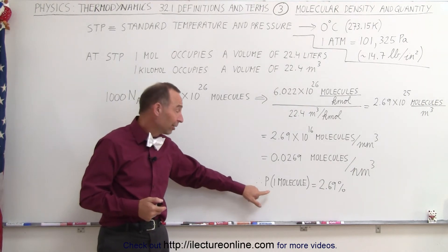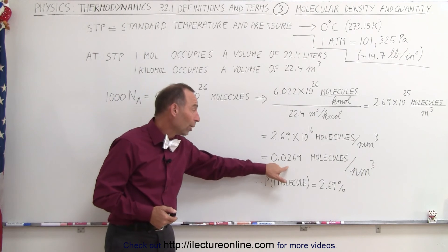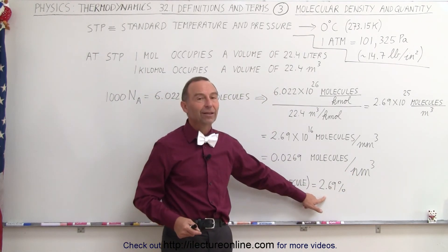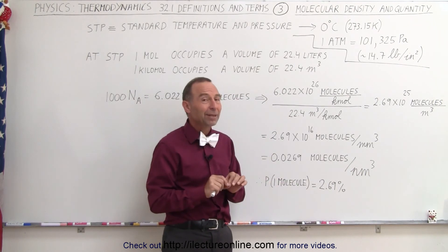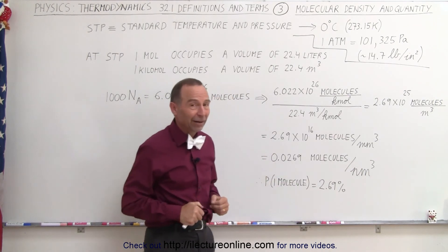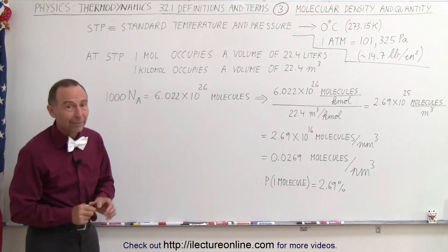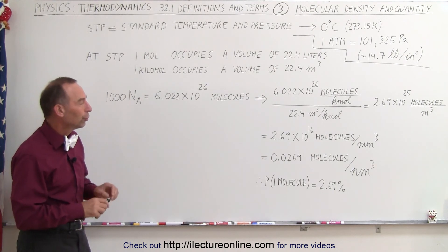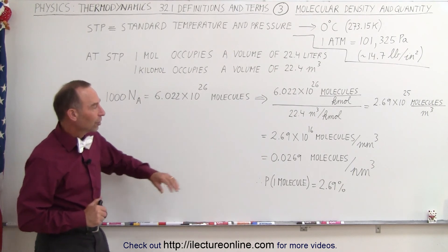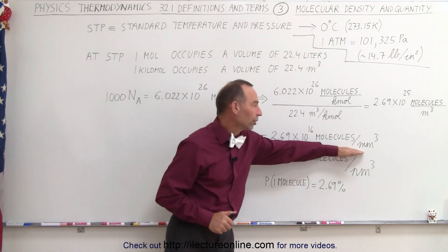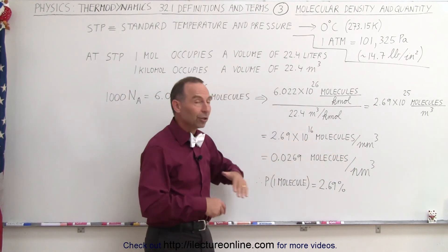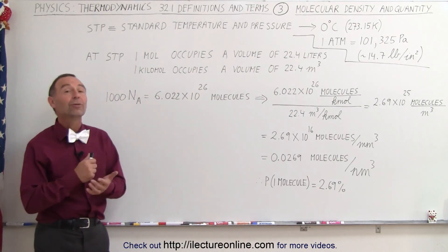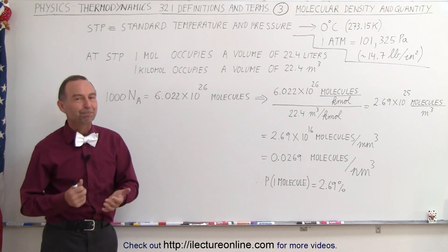Another way of saying that is that the probability of finding one molecule in a cubic nanometer of gas is only 2.69%. So most likely, if you take one cubic nanometer, you probably won't find a molecule there — and very seldom, about 2.69% of the time, there might be one in there. So the laws and equations no longer hold true at very small volumes. Whenever you talk about relatively larger volumes of a cubic meter and above, there are so many molecules that you no longer have to worry about it. Something to keep in mind, especially when we get to the statistical part of thermodynamics.